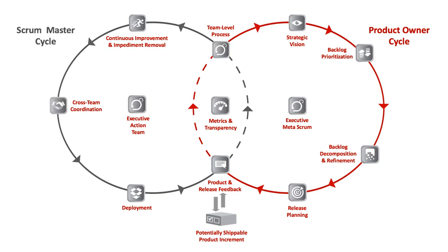End note: Scrum at Scale is designed to scale productivity — to get the entire organization delivering twice the value in half the time with higher quality and in a significantly improved work environment. Large organizations that properly implement the framework can cut the cost of their products and services while improving quality and innovation. Scrum at Scale is designed to saturate an organization with Scrum: all teams including leadership, human resources, legal, consulting and training, and product and service teams implement the same style of Scrum. Well-implemented Scrum can run an entire organization.